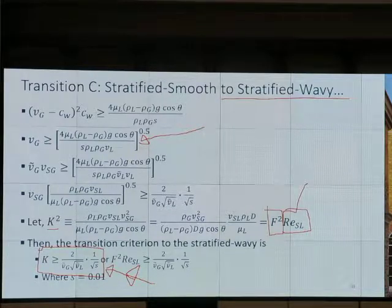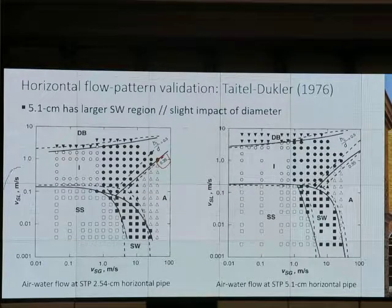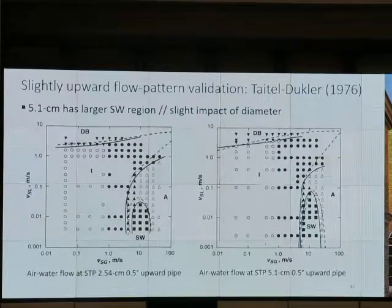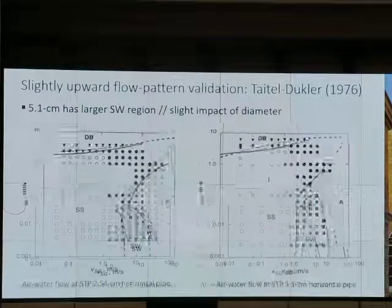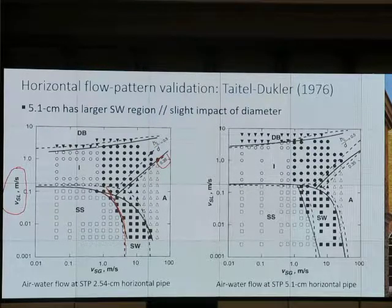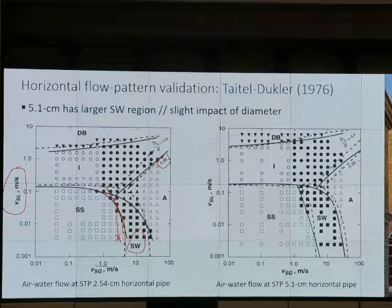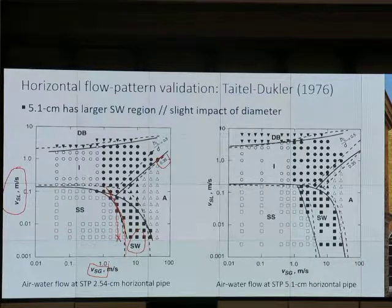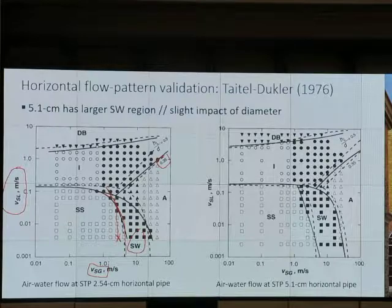This is the transition to stratified wavy. Does it make sense? K has to be greater than something, and K depends on VSL. VSL is the vertical axis of the flow pattern map. Let's take a look at something like this. That line is transition C. When I have too low VSL, K may not be enough, but when I increase it, it's good enough to have wave. If you have too high VSL, F² is a lot already, so it may satisfy the transition C criteria. Before we check C, we go direct from A.